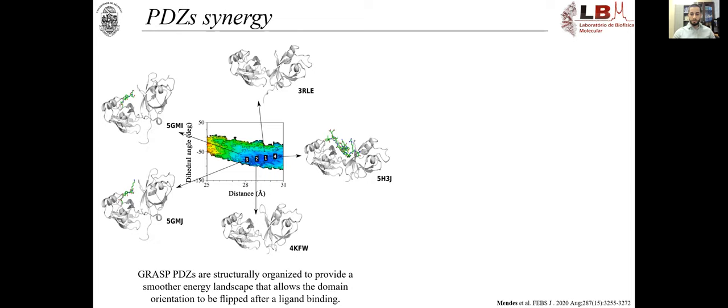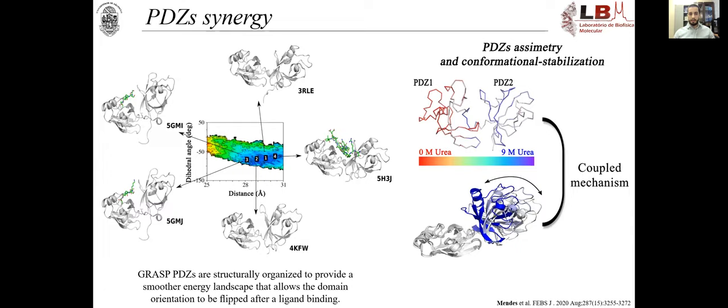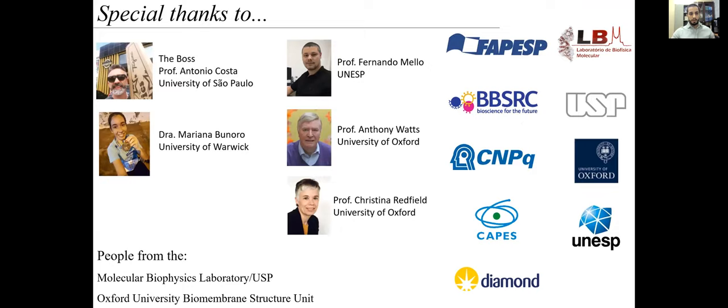What is interesting is that all these different conformations could be mapped in our ABF simulation as available conformations, at least free energy available conformations. They were already presented in the apo form. Basically, it means that Grasp's PDZs are strictly organized to provide a smoother energy landscape that allows the domain orientation to be flipped after ligand binding. That's how we believe Grasp can achieve its promiscuous interaction. I would like to thank my boss, Antonio Costa, Dr. Mariana Bunora, my collaborators, and all of you for watching. Thank you very much.